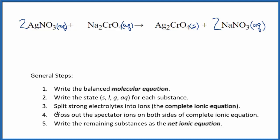Now that we have the states, we can split the strong electrolytes into their ions. And that will give us the complete ionic equation. Silver, that's always 1 plus. And the nitrate ion is always 1 minus. So I have two silver ions.